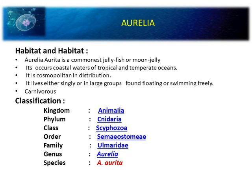Its classification: Kingdom Animalia, Phylum Cnidaria, Class Scyphozoa — a disc-like structure — Order Semaeostomae, Family Ulmaridae, Genus Aurelia, and Species Aurelia aurita.